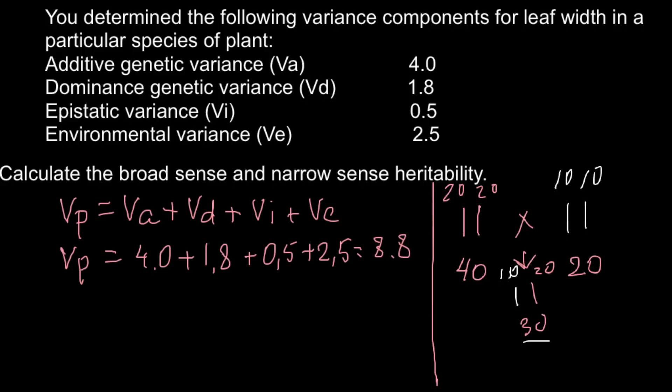This is what we call an additive trait, and this is additive genetic variance. One parent can be 40 cm, another plant can be 20 cm, and we can also find 30 cm — so this would be the variance between 40 and 20, with an intermediate of 30.